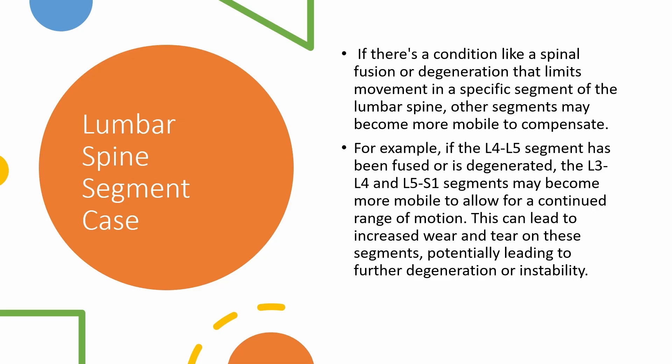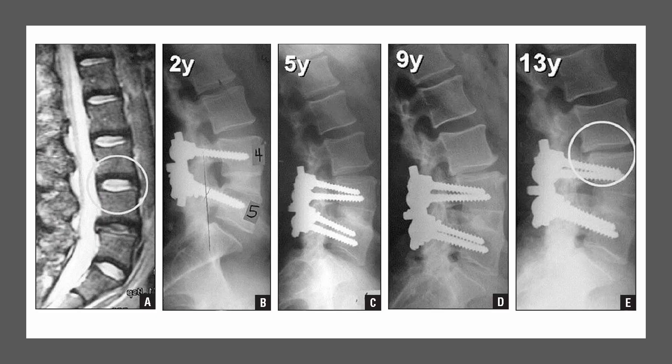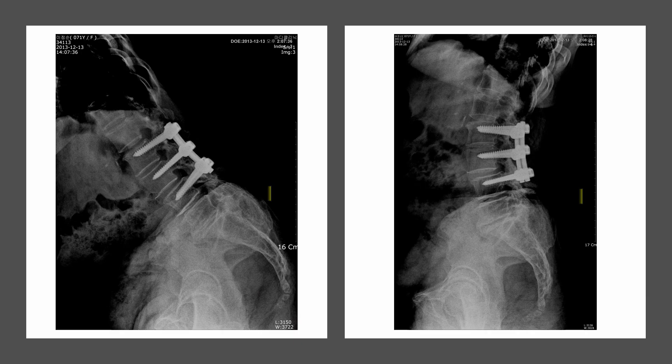For instance, in the case of spinal fusion or degeneration, if movement is limited in a certain segment of the lumbar spine, other segments may compensate by becoming more flexible. For example, if the L4-L5 segment has been fused or degenerated, the L3-L4 and L5-S1 segments may increase their mobility to allow for a continued range of motion. This adaptation can lead to heightened wear and tear on these segments, potentially instigating further degeneration or instability.